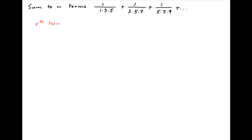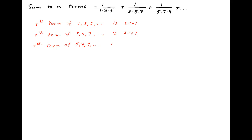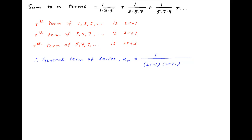The general term of the given series has three components in the denominator. The first components are 1, 3, 5, and so on, therefore the first component in the general term is 2r minus 1. Similarly, the second components are 3, 5, 7, and so on, so the second component is 2r plus 1. Finally, the third components are 5, 7, 9, and so on, so the third component is 2r plus 3. Therefore, the general term ur equals 1 upon (2r−1)(2r+1)(2r+3).